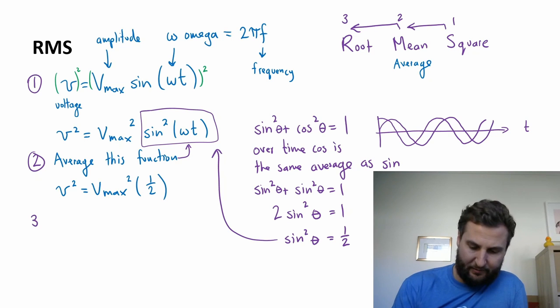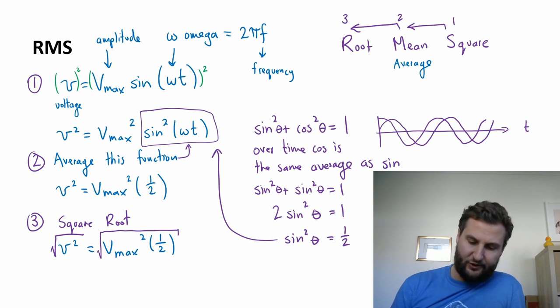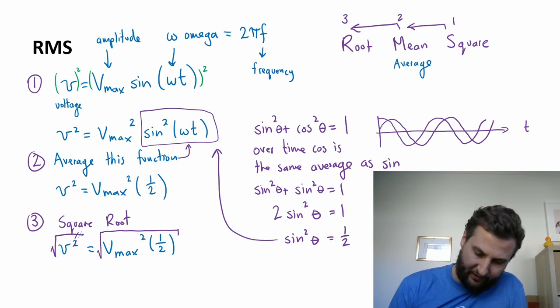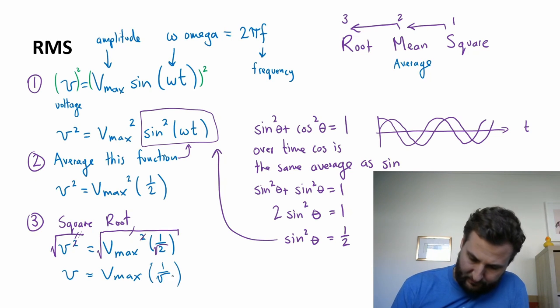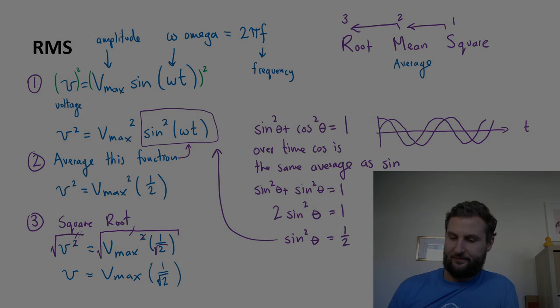Okay, that was step two. Step three now says let's take the square root. And we can do this easy enough. So two big root signs on the left. I'm just left with V. And on the right, I'm left with V max. And then one over root two. So this tells me that my voltage V actually equals V max over root two as an average value over time. So we have a factor here of one over root two that we're using.